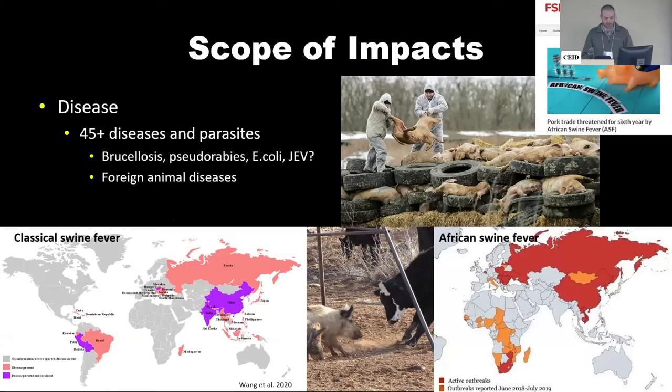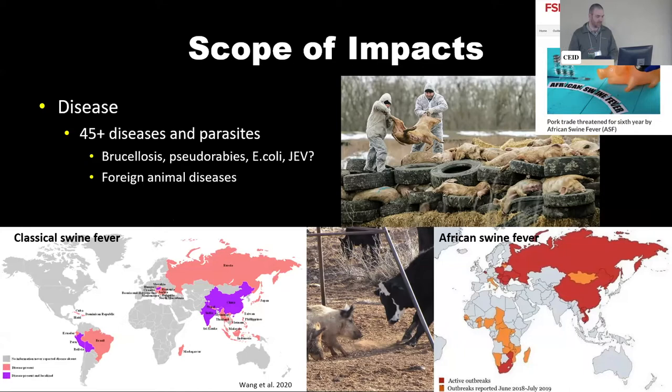Specific to this symposium is the disease factor: wild pigs can be a carrier of over 45 diseases and parasites. The main ones we think about in the United States tend to be brucellosis, classical and African swine fever, and pseudorabies. It's also important to mention Japanese encephalitis virus as a potential future concern for the United States — they've already found it in feral populations in Australia, so it's easy to imagine a spread there.